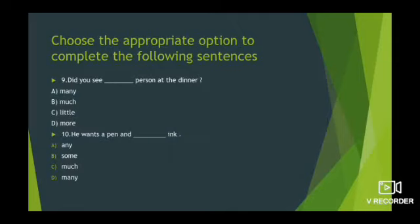Now see the next sentence: 'He wants a pen and dash ink.' And your options are: any, some, much, many. B option is the correct one — some. He wants a pen and some ink.